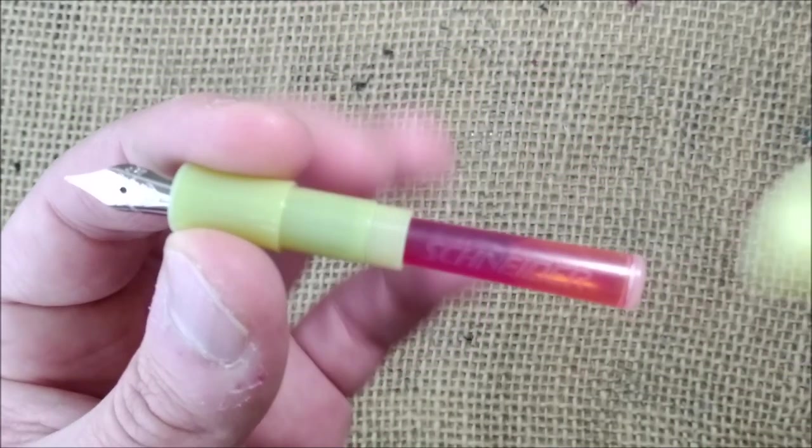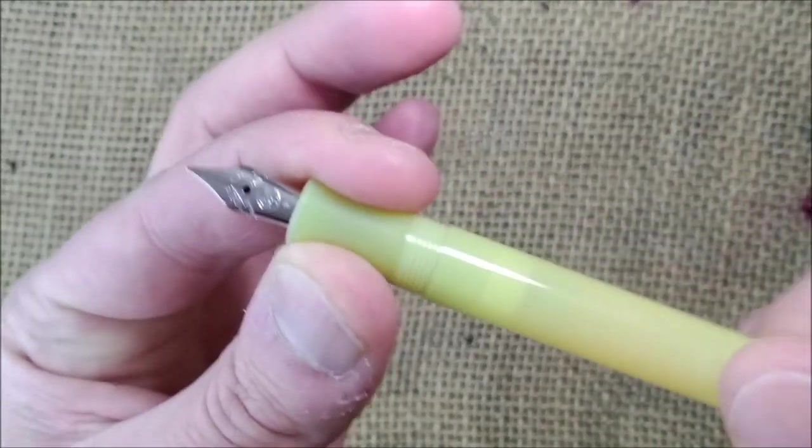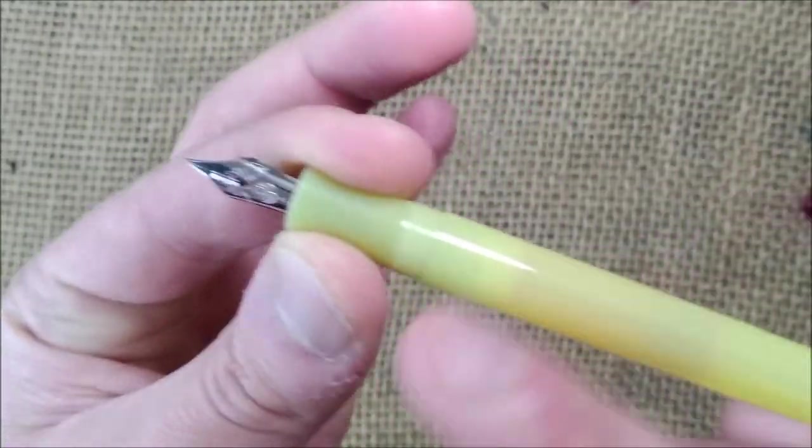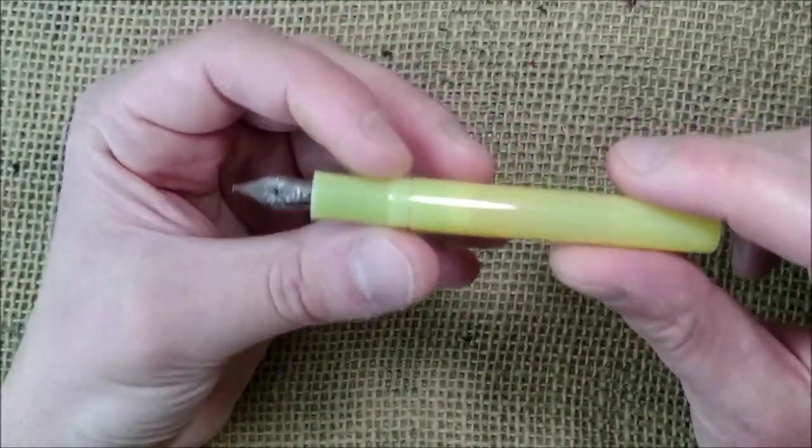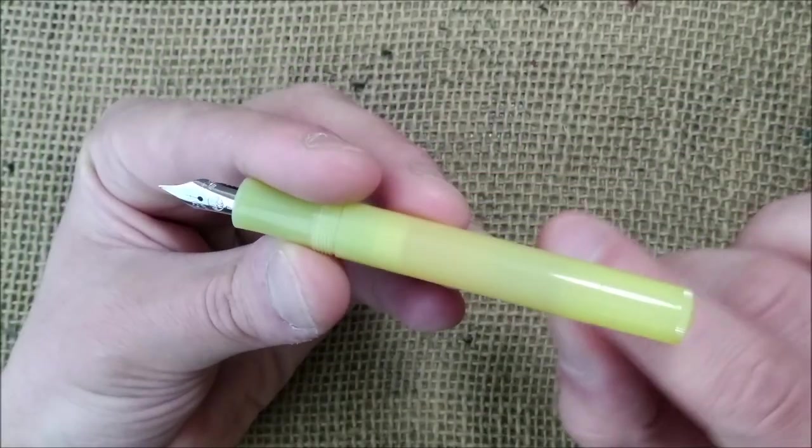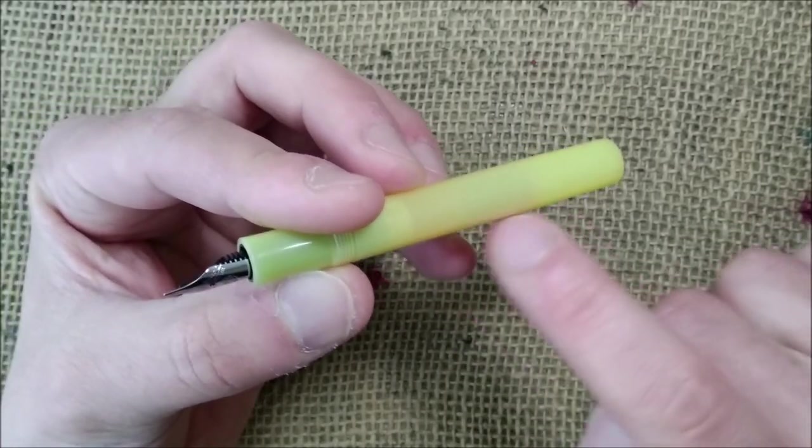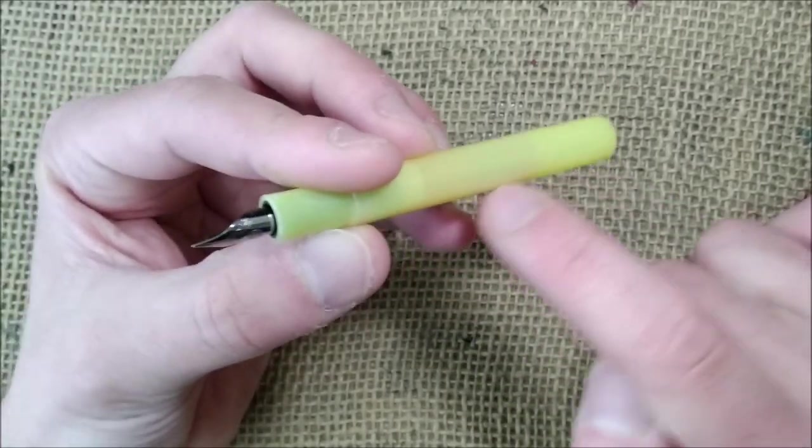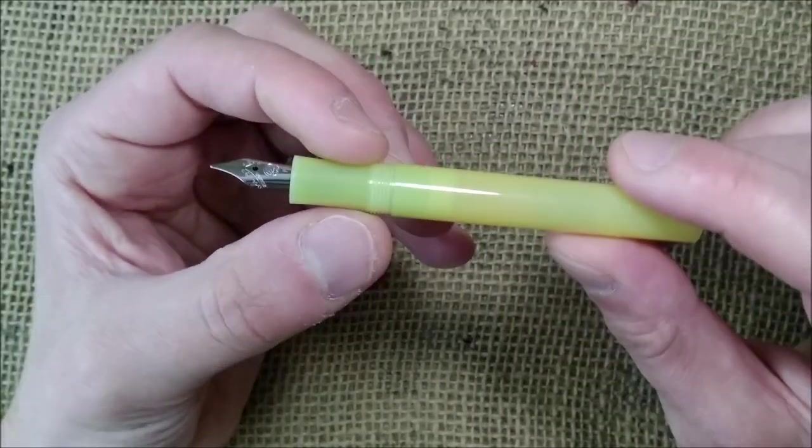The pen because it has threads and the threads are quite long you can put some silicone grease and you can eyedropper this pen although this is not something that I would like to do. But you can definitely do it and you can see easily the ink level inside because this is not transparent but it is translucent enough to do it.